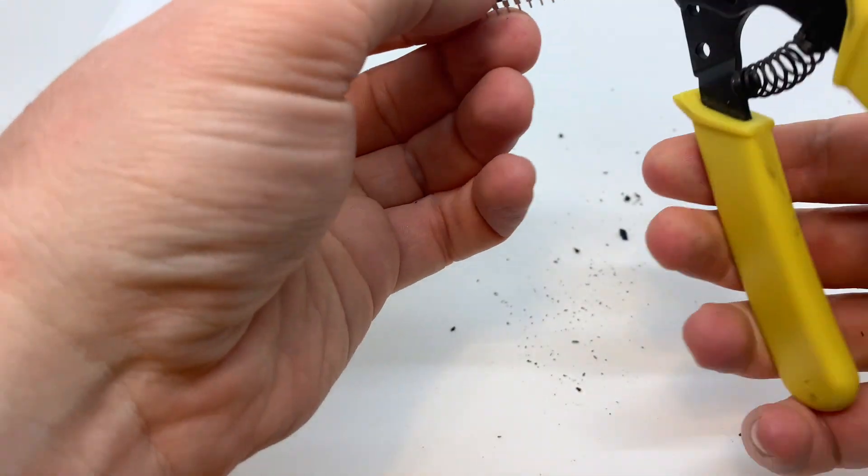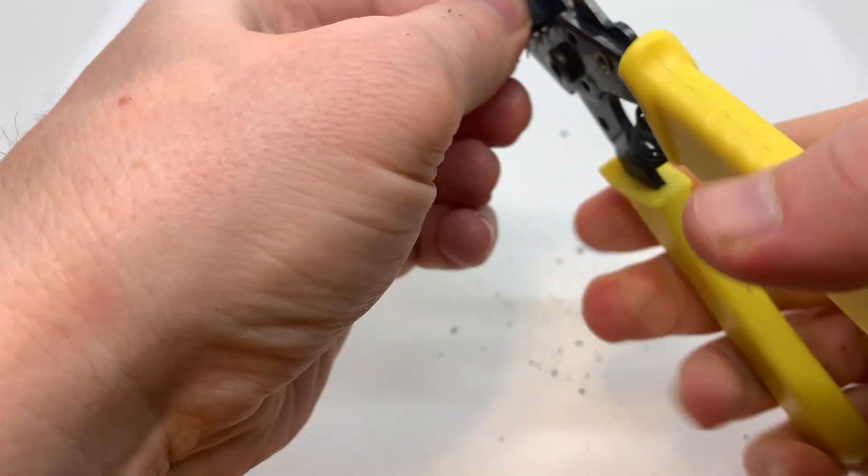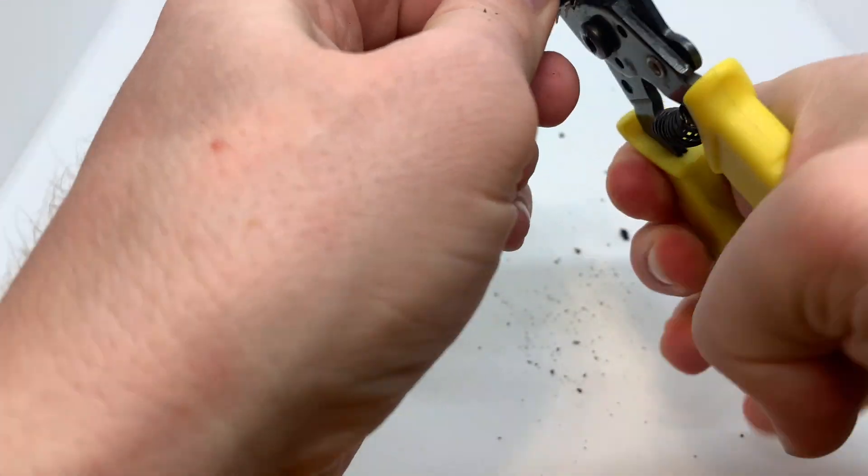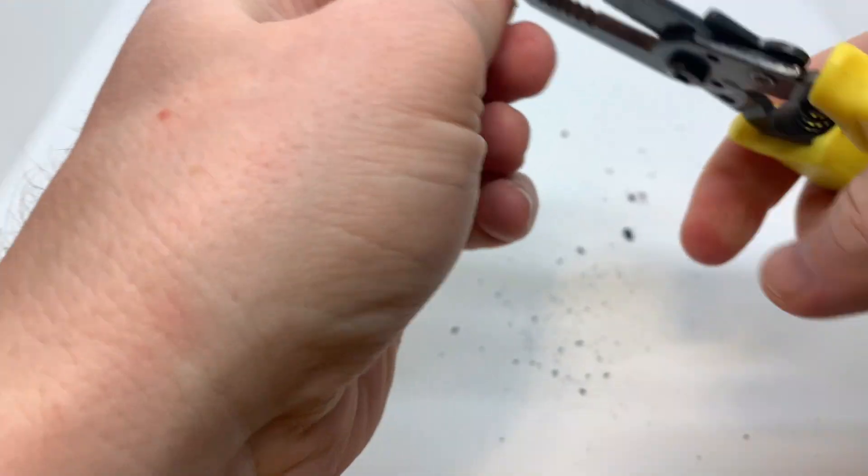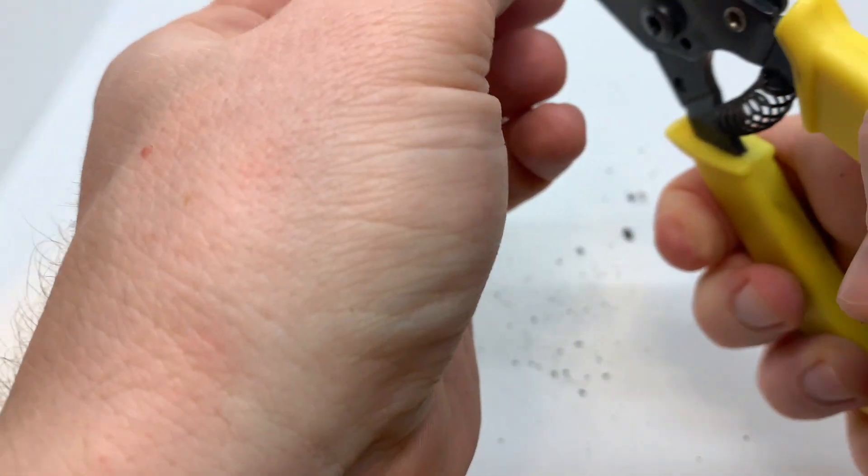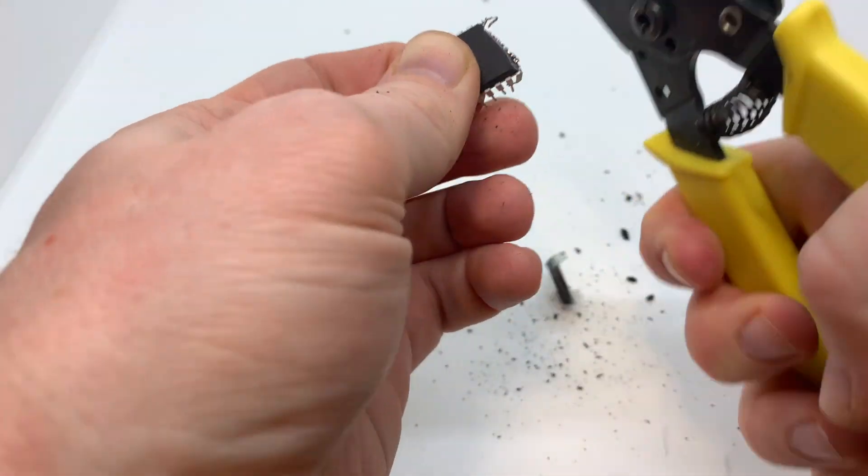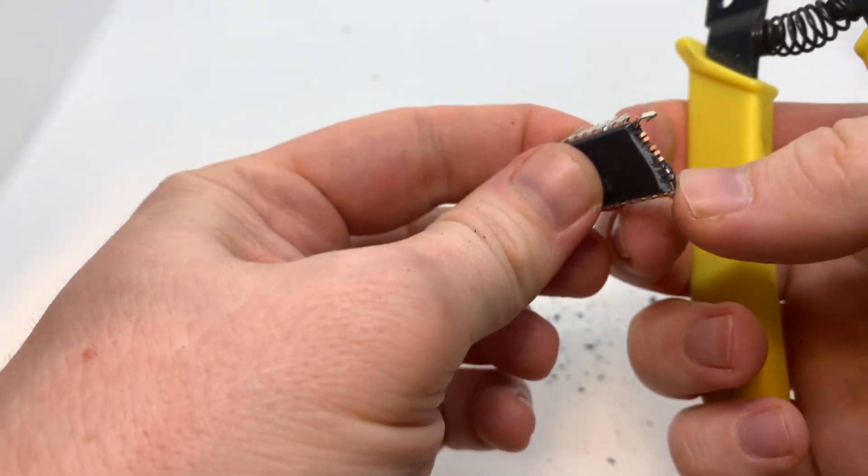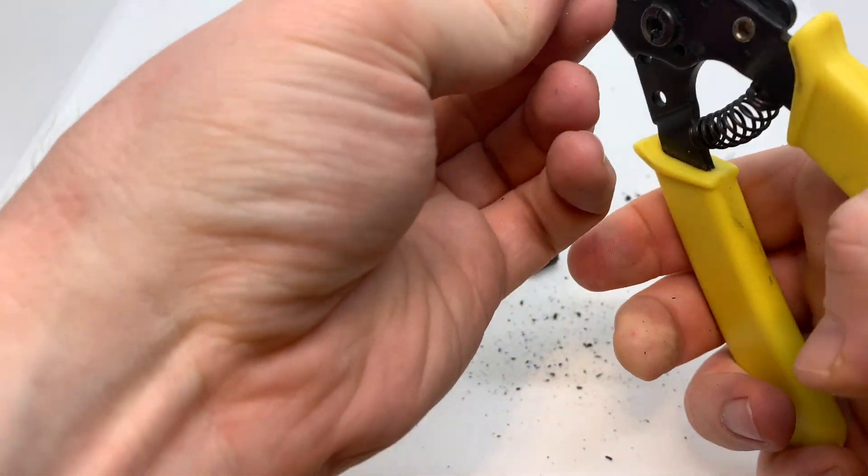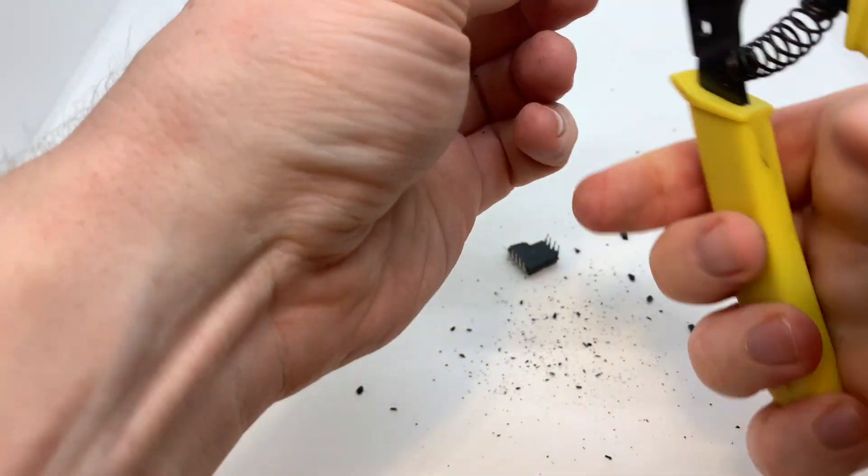We don't have something here. We check the other side. And what we have here is basically pretty much the same. Just wires, nothing else. So now we can strip all these pins.